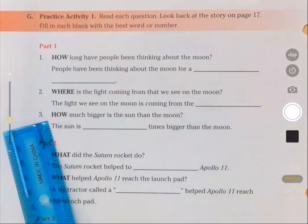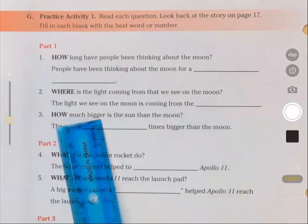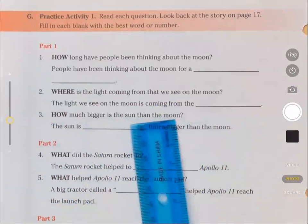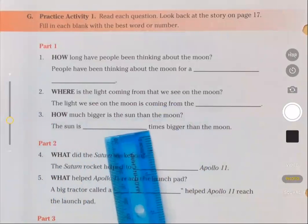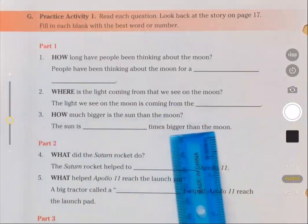Question three: How much bigger is the sun than the moon? The sun is blank times bigger than the moon.